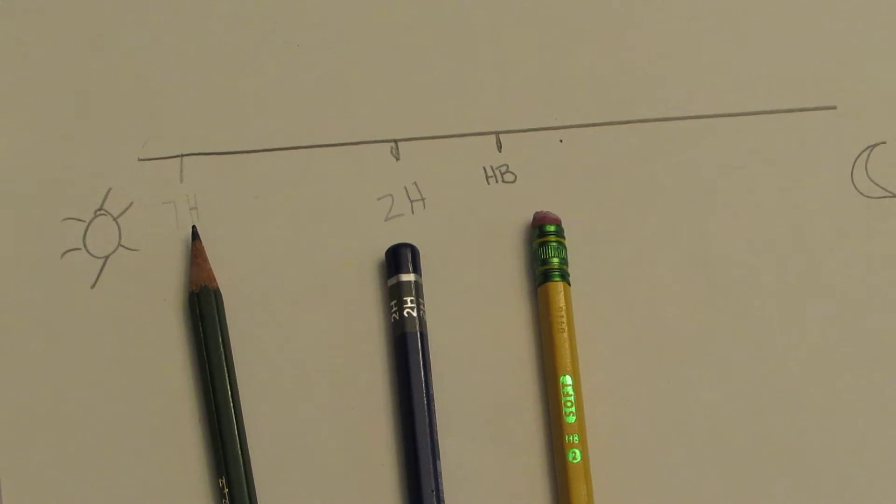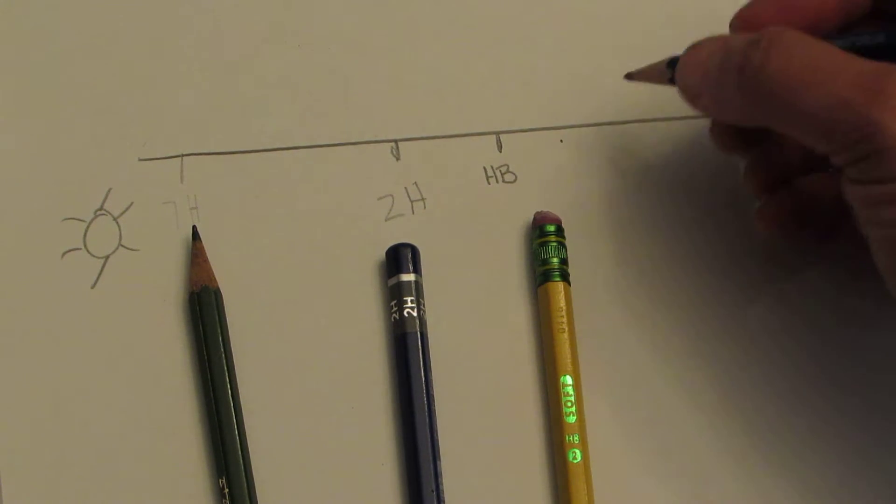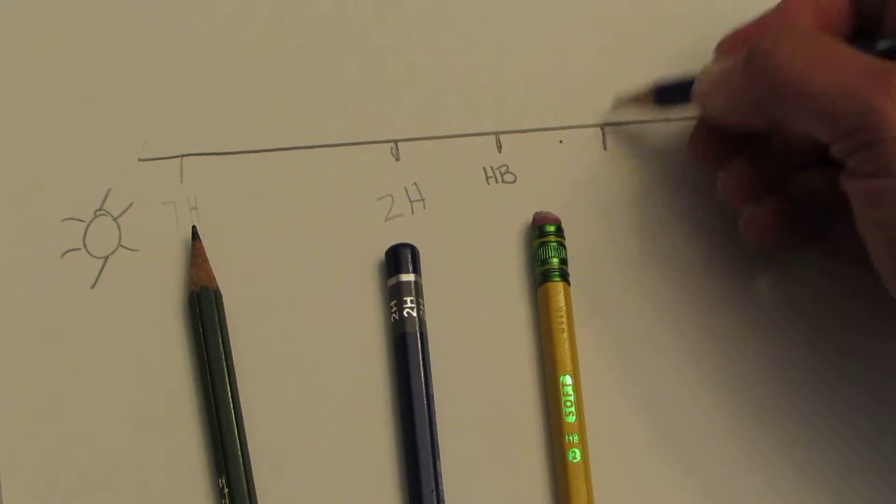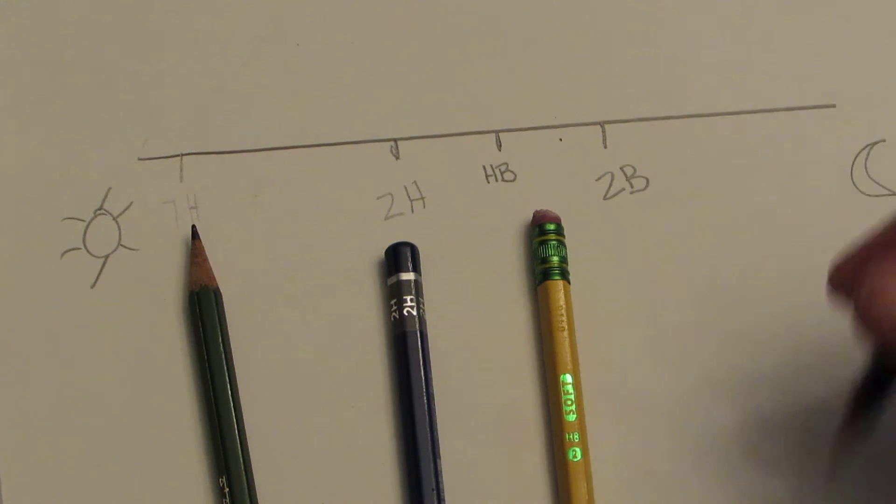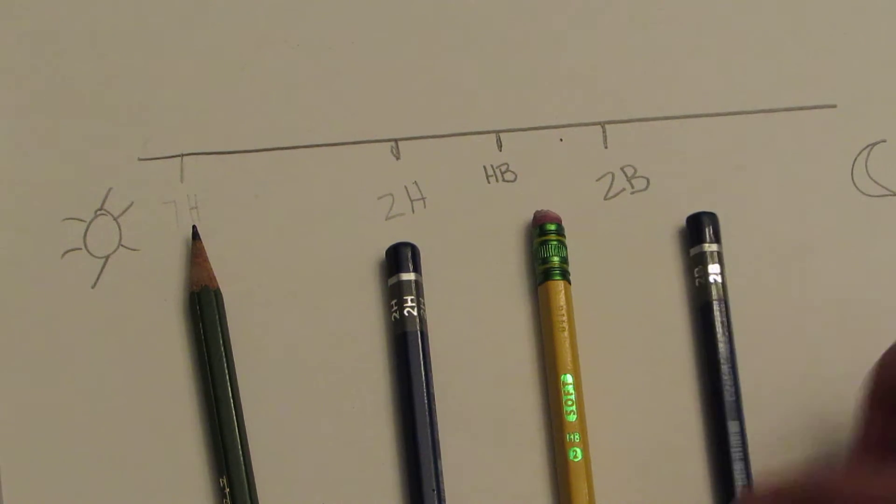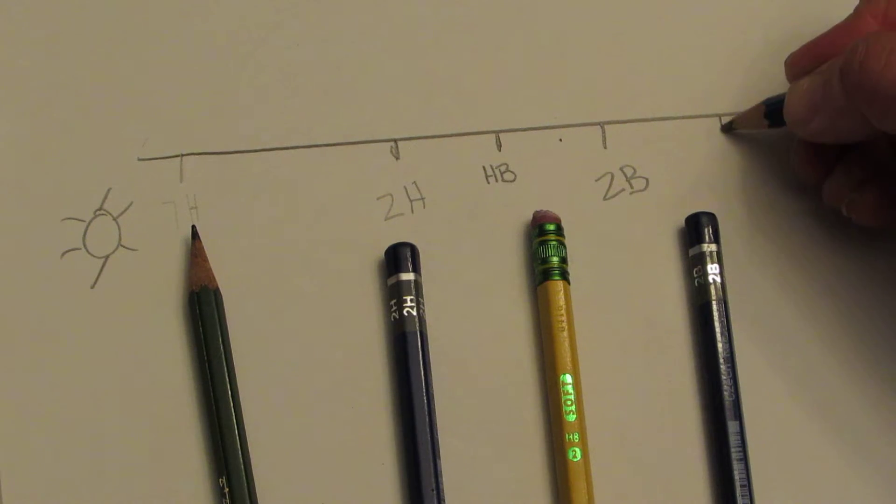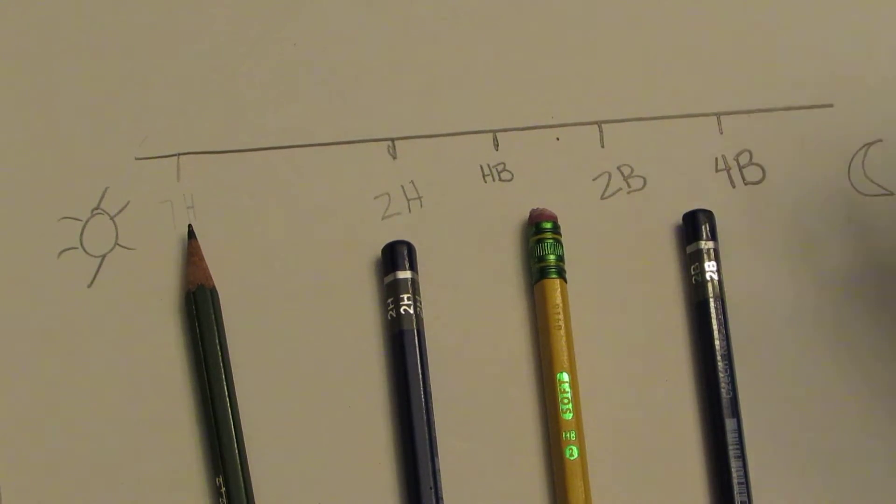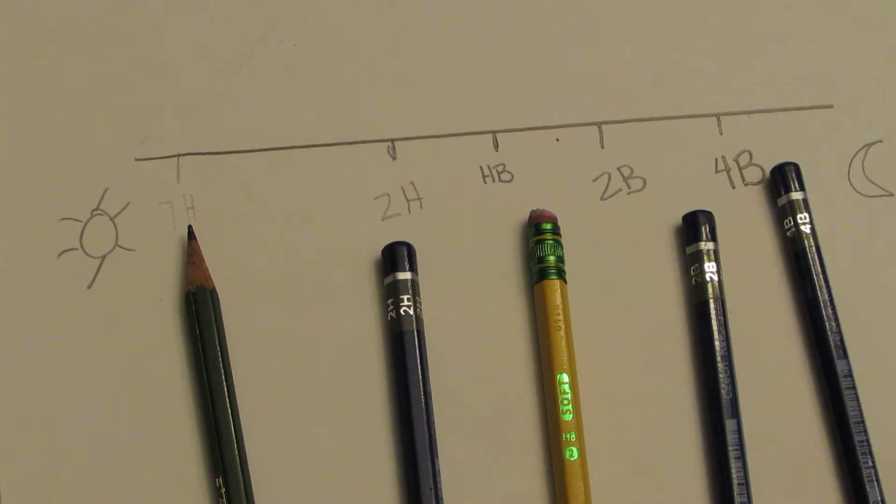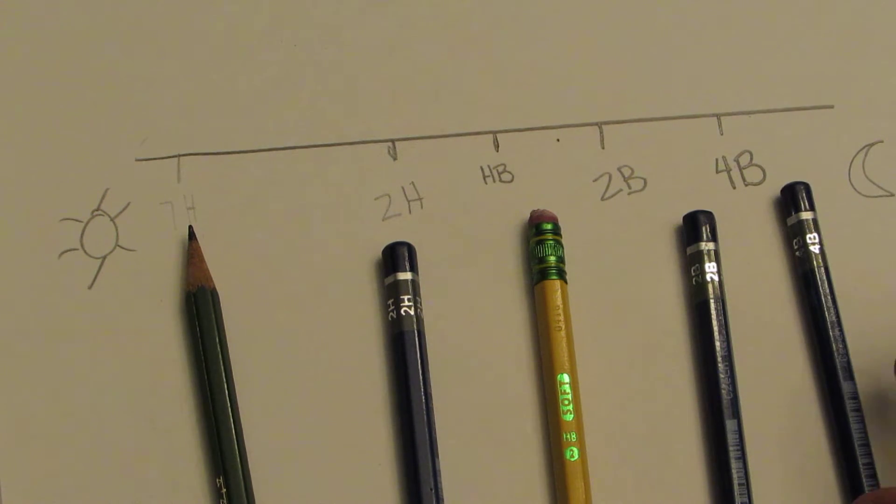I have some other pencils here. I have a 2B. This one would be over on the positive number line side. 2B, so it's getting a little darker. And I have a 4B, so I'm going to take this and put it right about here. So these are some examples of my pencils and kind of where they belong.